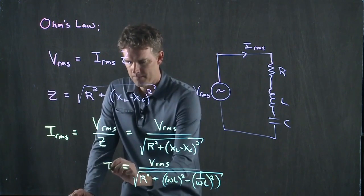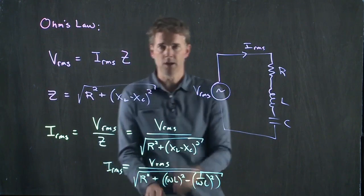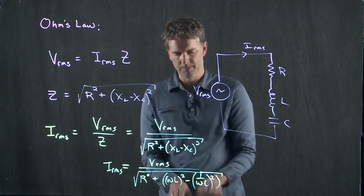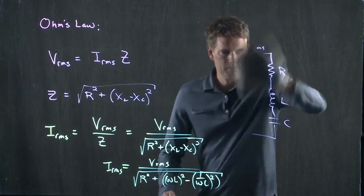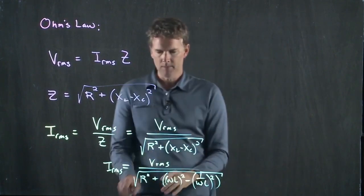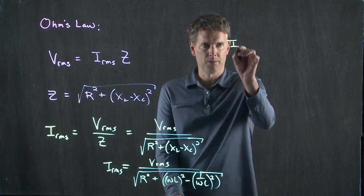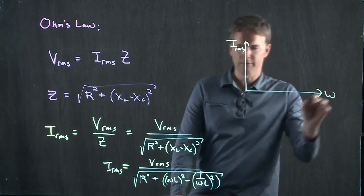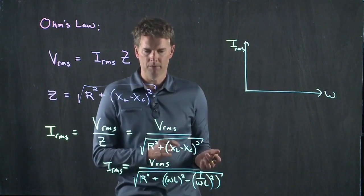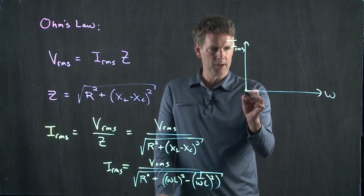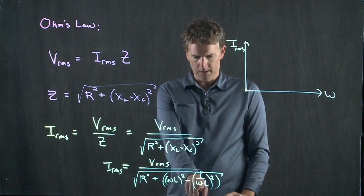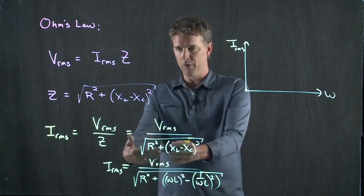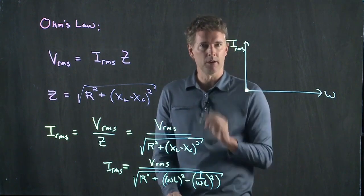If I'm looking for current to go big, I want to minimize what's in the denominator. So if I think about the current through the system as a function of the driving frequency omega, what happens? Well, as omega goes down here to zero, it looks like this one is going to blow up to infinity because we have one over zero. We're going to have a voltage divided by infinity. That is a current of zero.